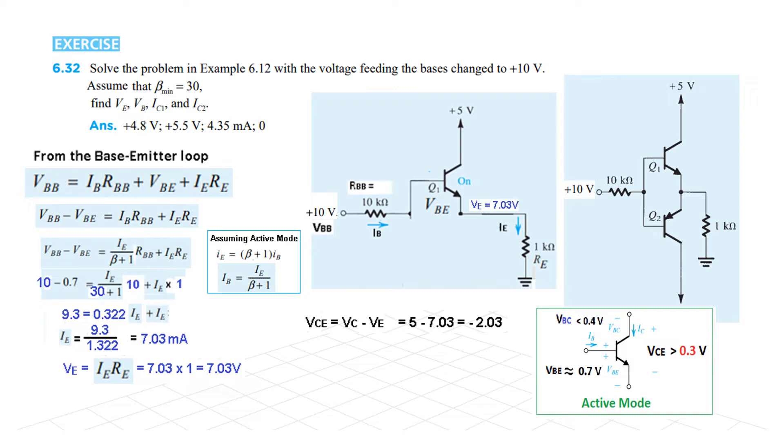Now how much is VCE? Look from here. This is 5 volt, this is 7.3. So VCE will be VC minus VE, 5 minus 7.3 is equal to minus 2.03.